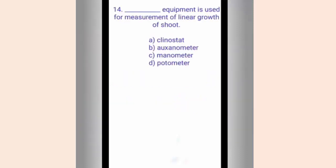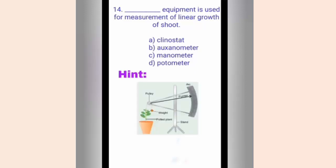Question fourteen. Dash equipment is used for measurement of linear growth of shoot. The options are A. Clinostat, B. Auxanometer, C. Manometer, D. Potometer. The hint shows an image of the equipment. Remember, auxin is used to increase growth in plants. The correct answer is option B, Auxanometer.